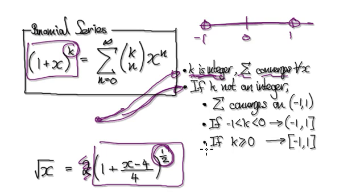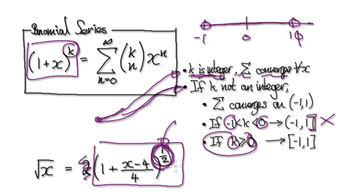But then if k is between negative 1 and 0, then you can include this. But this is not about k's. Our case is actually this: if k is greater or equal to 0, which is our case here, k is a half. So this is our scenario.